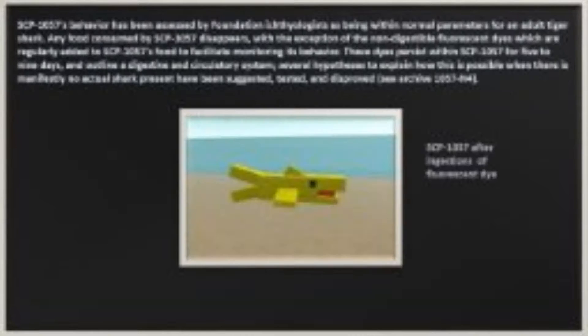SCP-1057's behavior has been assessed by Foundation ichthyologists as being within normal parameters for an adult tiger shark. Any food consumed by SCP-1057 disappears, with the exception of the non-digestible fluorescent dyes.